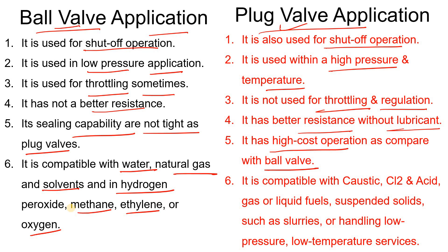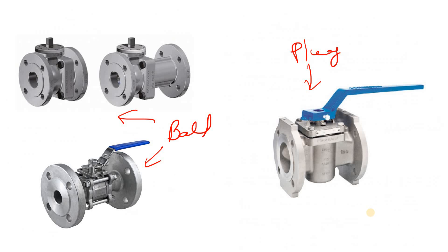The plug valve is most compatible with caustic lines, chlorine lines, and acid lines. In ball valves, when used in caustic lines, choking problems can occur. Similarly, in molten urea lines, choking problems can occur, so we prefer the plug valve there. Plug valves are also used in steam lines, suspended solids, and slurries.